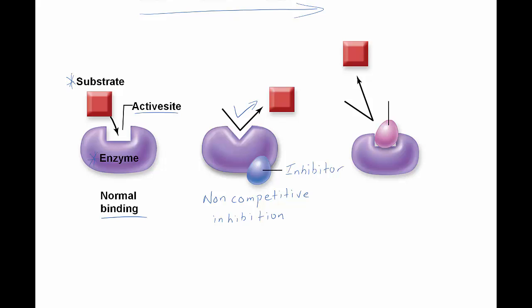Because it's not competing with the substrate for the active site. The other case is when the inhibitor attaches itself directly to the active site, so that the substrate cannot attach itself to that active site. And because it's directly competing for the active site, it is called competitive inhibition. So these are the two ways in which negative feedback can occur.